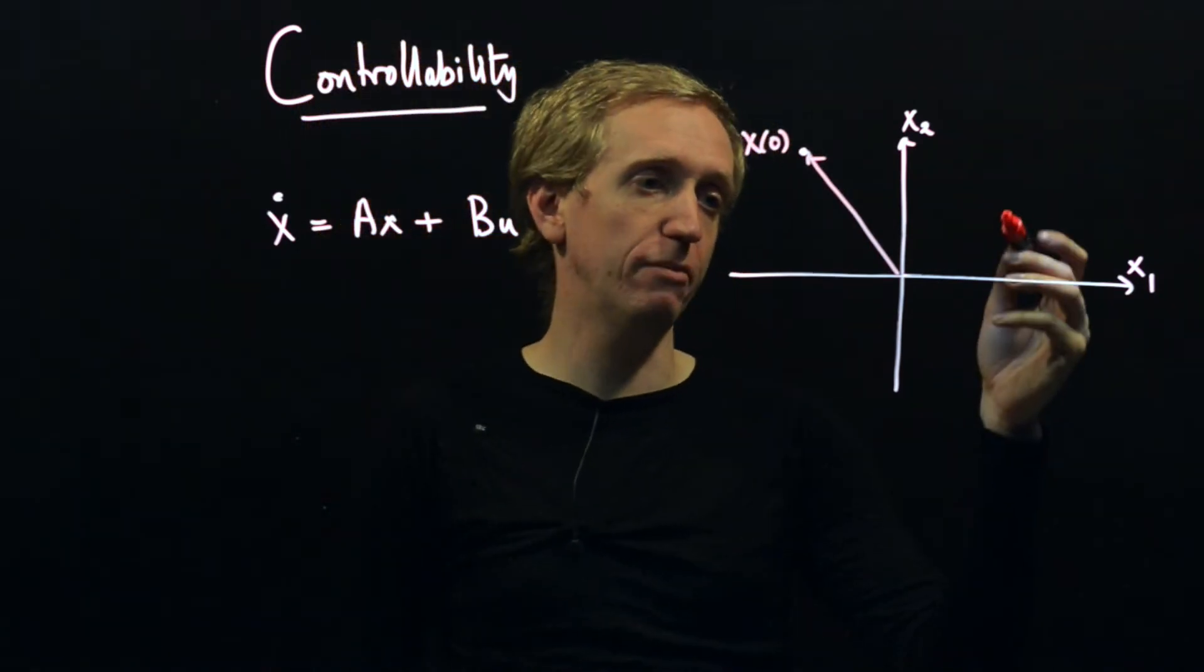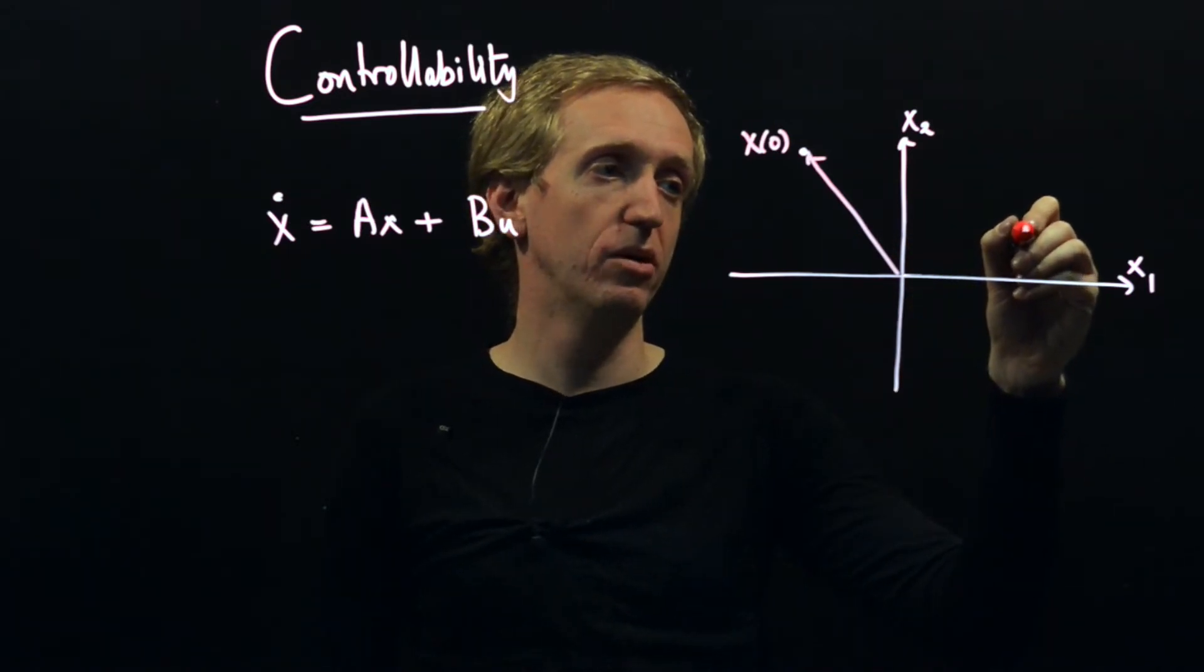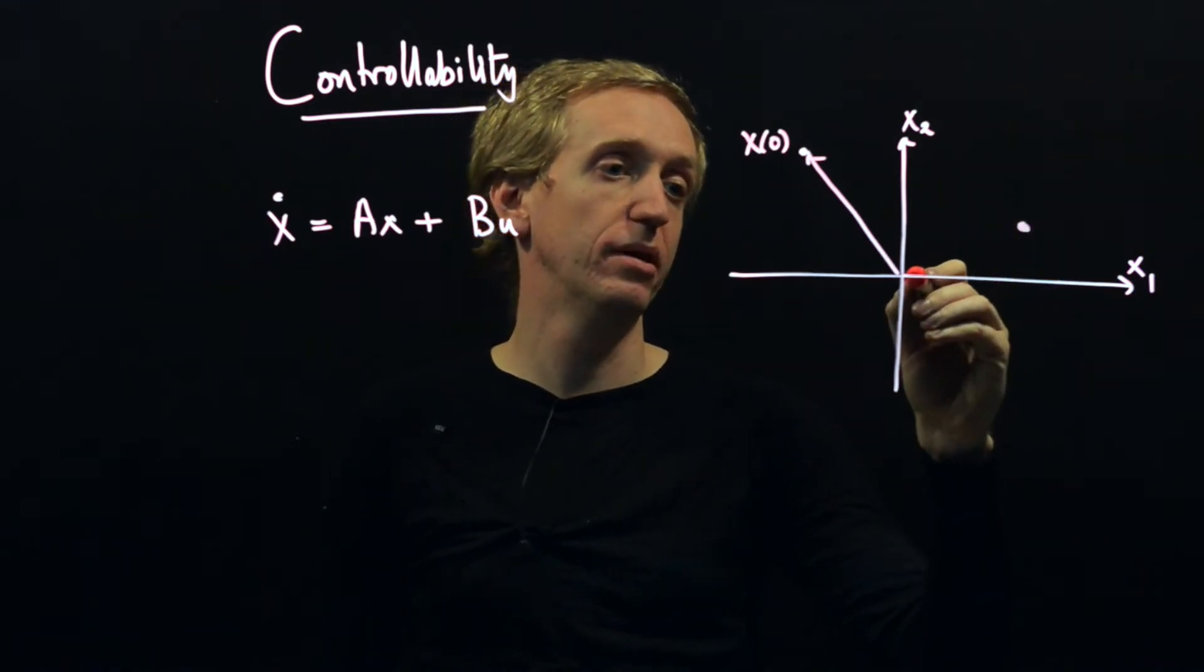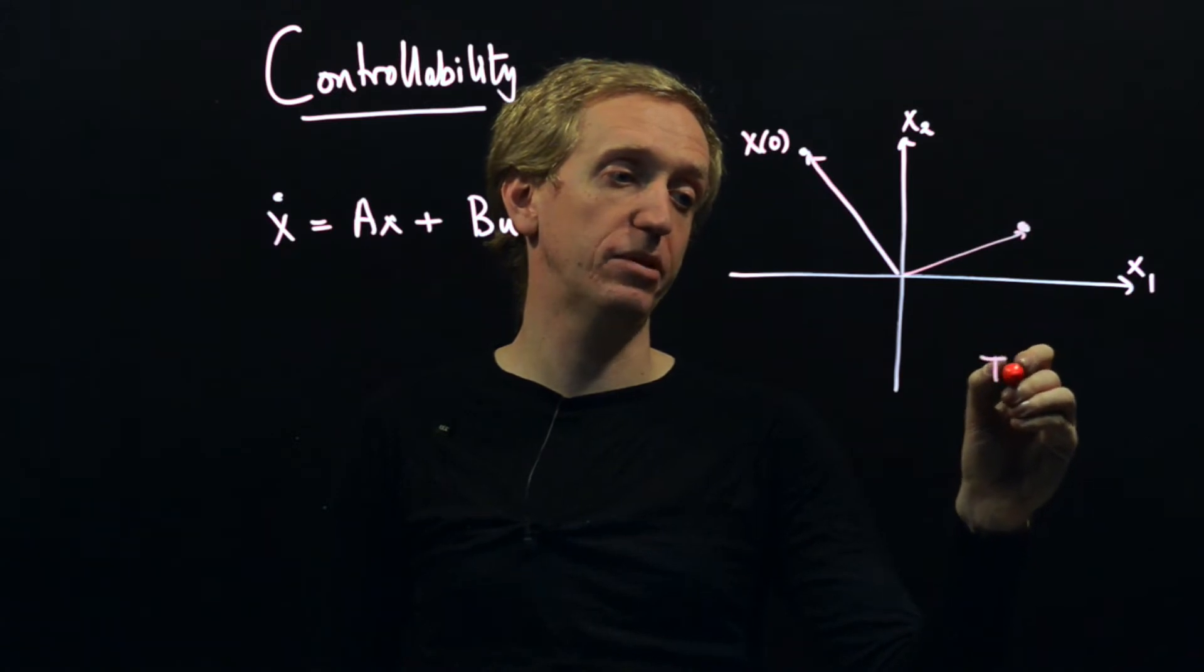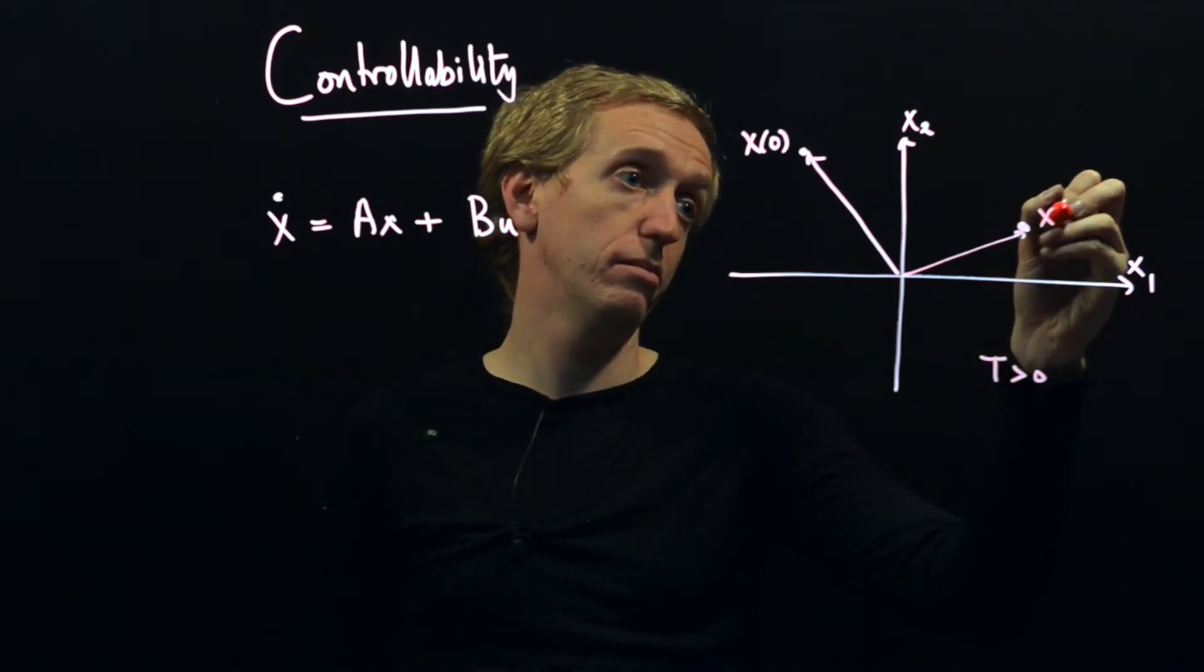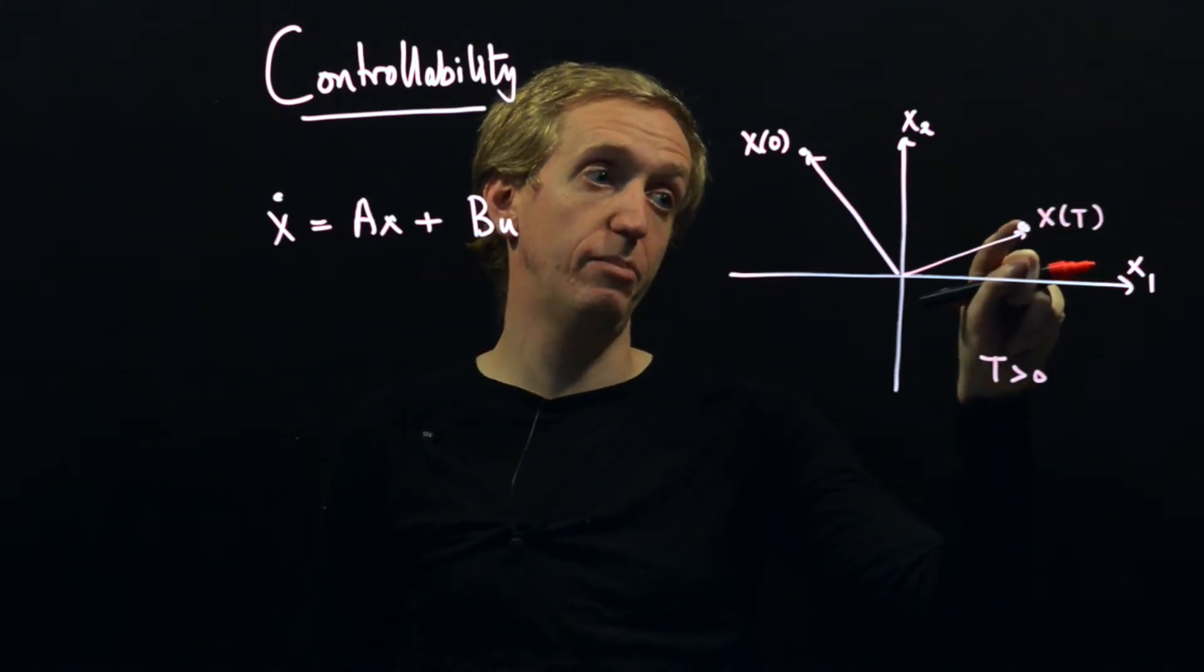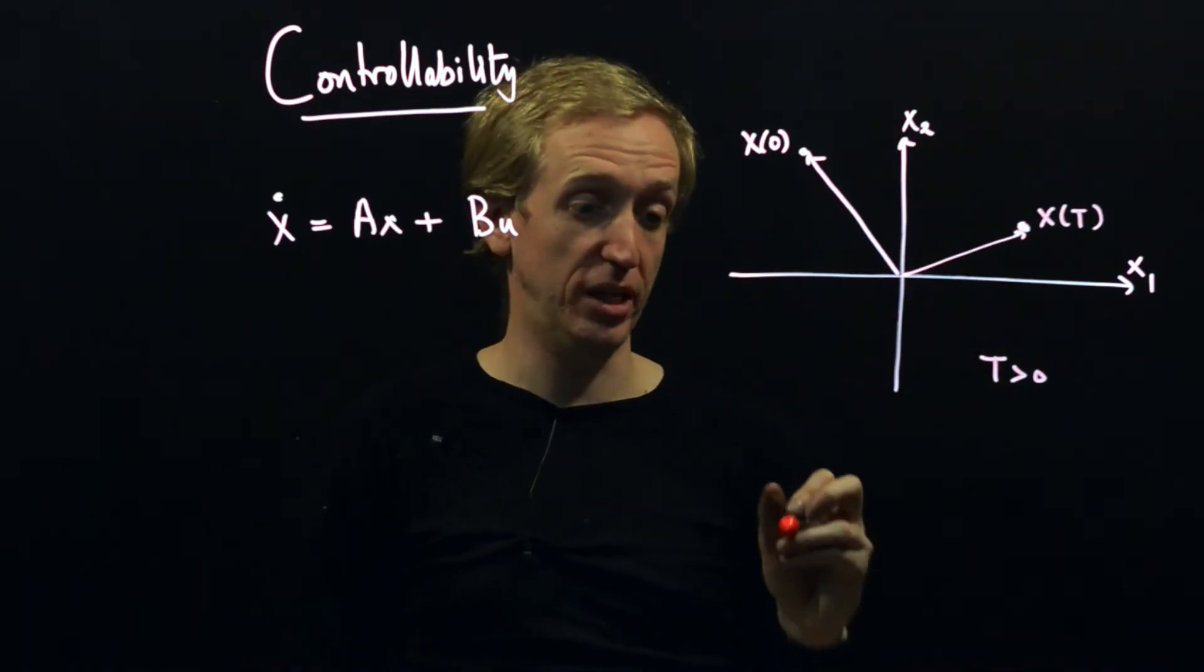We were at this point here, but we don't want to be there. We want to be over here, and we're interested in getting to this point of the state space for whatever reason. And we would like to get there at some time capital T greater than zero. We would like the value of our state at time capital T to be at this point here. Does there exist a control input that will achieve this?